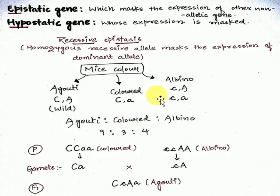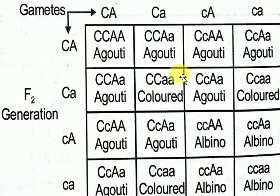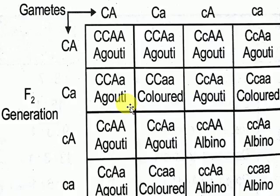So the ratio 9:3:4 is characteristic of recessive epistasis, and the same ratio applies to supplementary genes — so don't confuse the two. From this Punnett square we can easily find the probable number of outcomes in each category: agouti, colored, or albino.